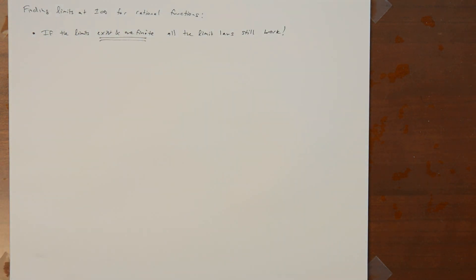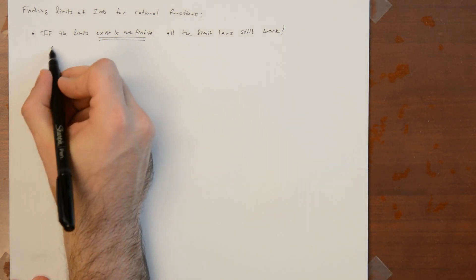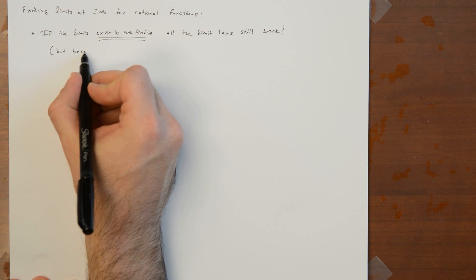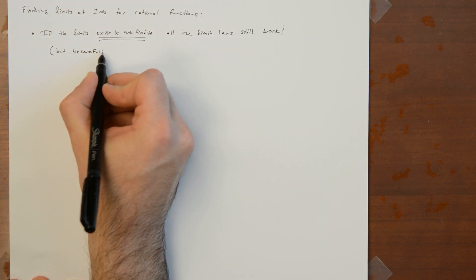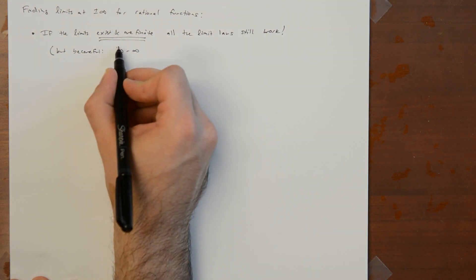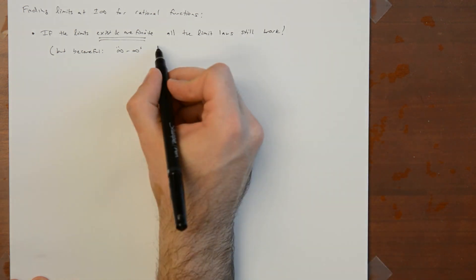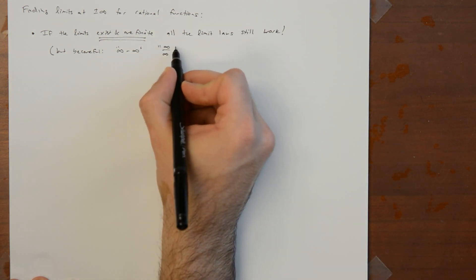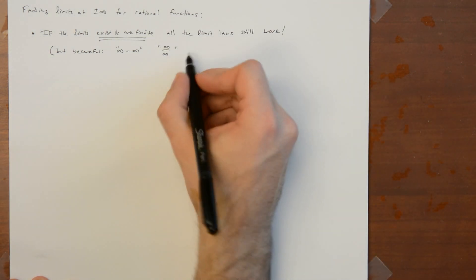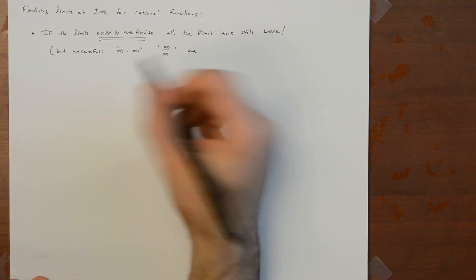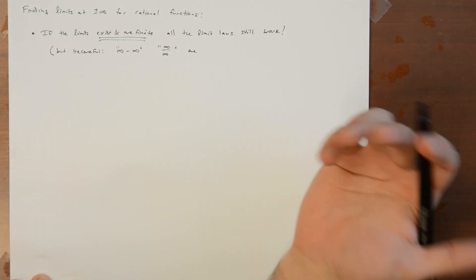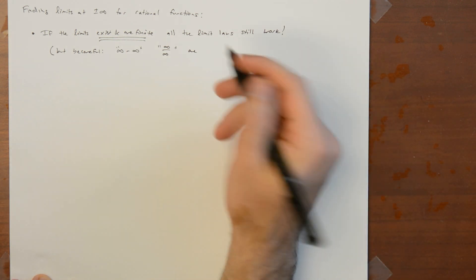The one thing you need to be careful about is: be very careful thinking about infinity. You should not be doing algebra with infinity. Infinity minus infinity is an indeterminate form, and infinity divided by infinity is an indeterminate form. These things may or may not converge, and you don't know what number, if any, they converge to.